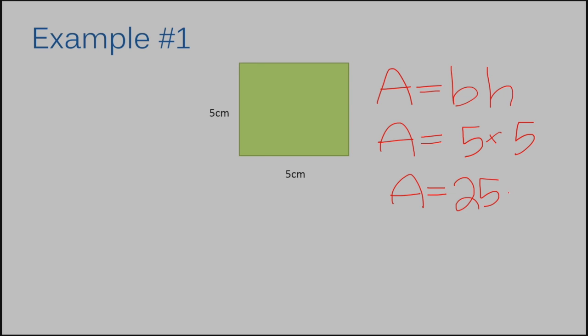And remember, like my last slide, I explained we're going to write our numerical answer, then we're going to write our units. In this case, it's going to be centimeters. And then we're going to write squared. So the answer to example number one is area equals 25 centimeters squared.